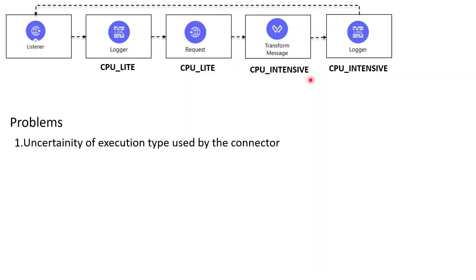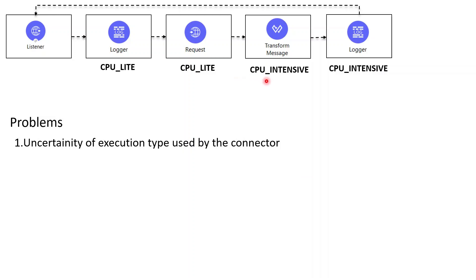When CPU Intensive is doing the task of Blocking I/O, the CPU Intensive pool might get exhausted, because CPU Light and CPU Intensive pools are always smaller than the Blocking I/O thread pool. Another example is using a wait function in the transform — which is highly discouraged even in the documentation. The wait function will cause the CPU Intensive thread to block, potentially exhausting the thread pool and impacting performance.